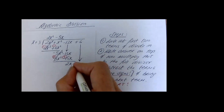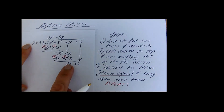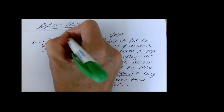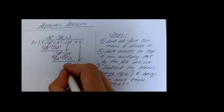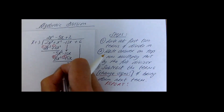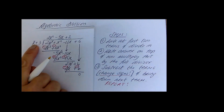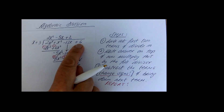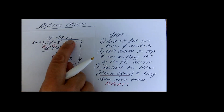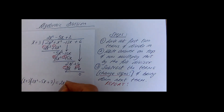Bring down the next term and repeat again. Look at x and 2x: what multiplies by x to give 2x? The answer is 2. So 2 times x is 2x and 2 times 3 is 6. Change the signs — 2x cancels and 6 take away 6 is zero. So x plus 3 divides into 2x cubed plus x squared minus 13x plus 6 exactly 2x squared minus 5x plus 2 times. In other words, x plus 3 times 2x squared minus 5x plus 2 equals the original expression.